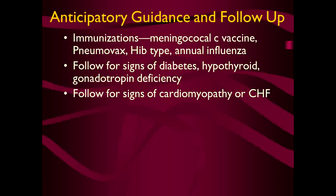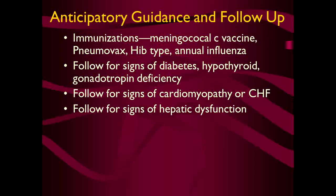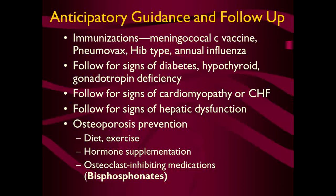Similarly, follow for gonadotropin deficiency and signs of cardiomyopathy or chronic congestive heart failure. Check hepatic dysfunction frequently with LFTs and ultrasound; the patient may have hepatomegaly because of iron deposition. The patient may also suffer from osteoporosis — prevent it with diet, exercise, hormone supplementation, and bisphosphonates. Always keep monitoring ferritin levels in beta-thalassemia major patients.